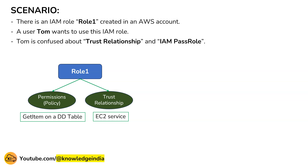Now Tom wants to use this role. Can Tom go ahead and actually assume Role One and start operating with it? The answer is no — Tom cannot assume this role, because in the trust relationship it is clearly written that only the EC2 service can assume this role.